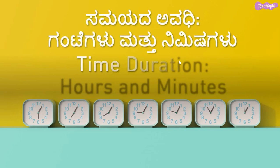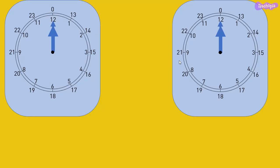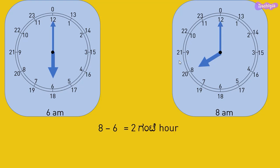In the present video, we shall explore the methods of calculating the time duration in hours and minutes. To find the time duration between 6 am and 8 am, we can find the difference between 8 and 6 and say that it is 2 hours. This involved only counting of hours. But in our day-to-day life, we encounter many situations wherein time duration involves counting of both hours and minutes.